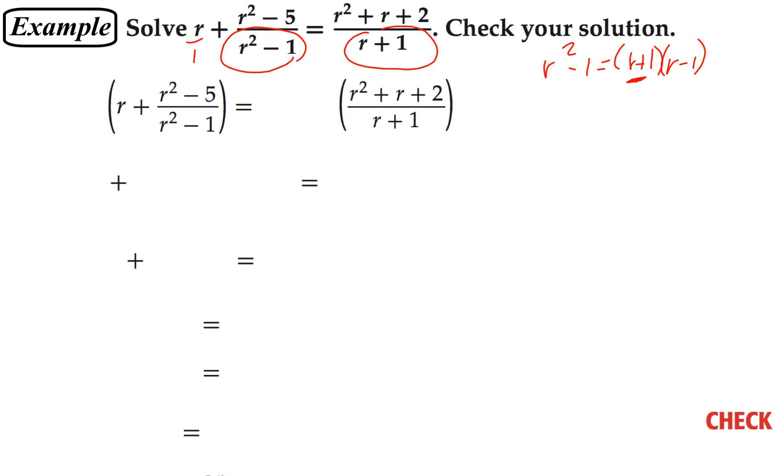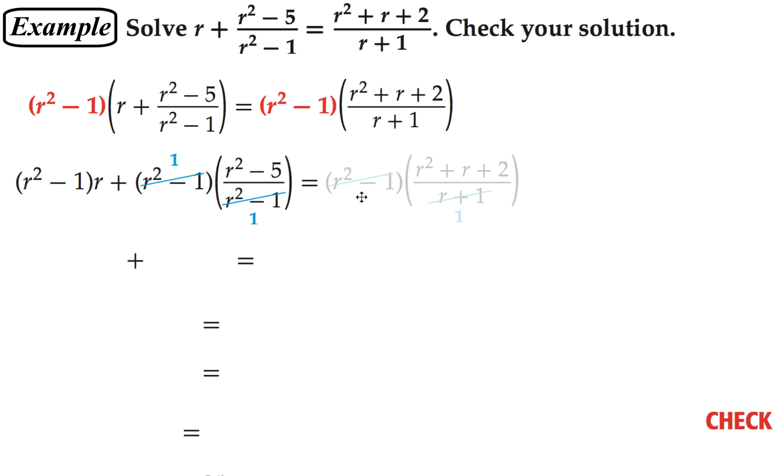This one is really over 1. So our least common denominator here is going to be r squared minus 1. So we're going to go ahead and multiply both sides by r squared minus 1 and then distributing that to each term and then go ahead and multiply that through. So r squared minus 1 times r gives us r cubed minus r.